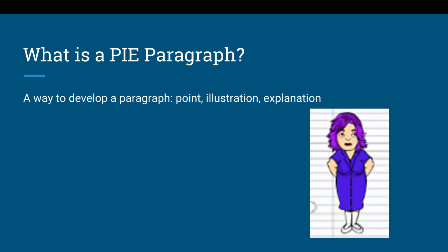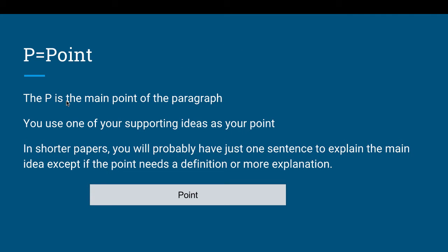What is a PIE paragraph? It's a way to develop a paragraph. You have a Point, you have an Illustration, and you have an Explanation. What is a point? The point is the main idea of the paragraph — it's the main point. You use one of your supporting ideas as your point.